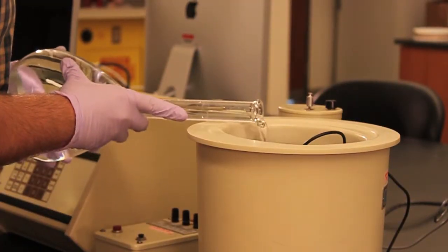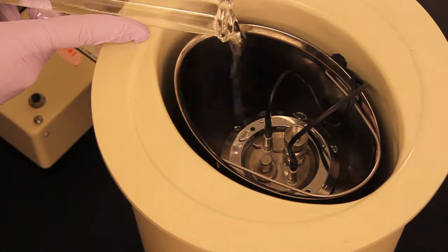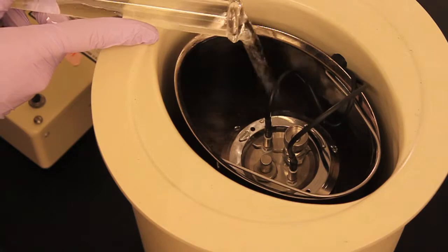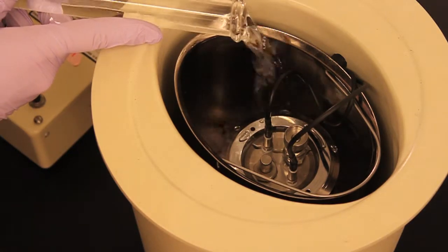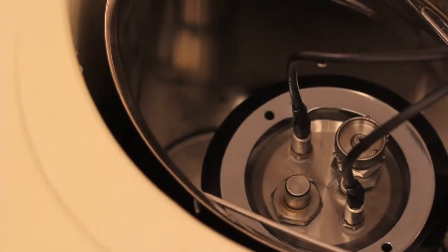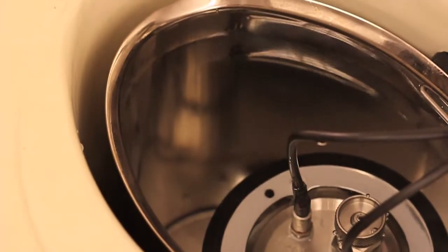You now need to fill the pail with a known amount of water. Fill a flask with 2,000 grams of room temperature water. Record the mass of the flask and water. Carefully pour the water into the pail, avoiding spills and splashes. Reweigh the empty flask to determine how much water is in the pail.